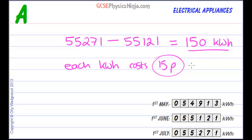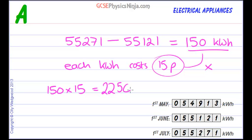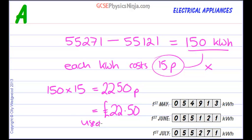We simply need to multiply these two together: 150 multiplied by 15 equals 2250 pence. We're working in pence, and that's not very useful, so let's convert that to pounds — that would be £22.50.